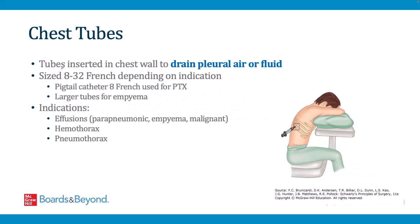Chest tubes are inserted in the chest wall to drain pleural air or fluid and range in size from 8 to 32 French depending on the indication. Smaller 8 French tubes (pigtail catheters) are used for pneumothorax, while larger tubes are used for empyema. Key indications for chest tube placement include pleural effusions (parapneumonic effusions, empyemas, malignant effusions), hemothorax, and pneumothorax.